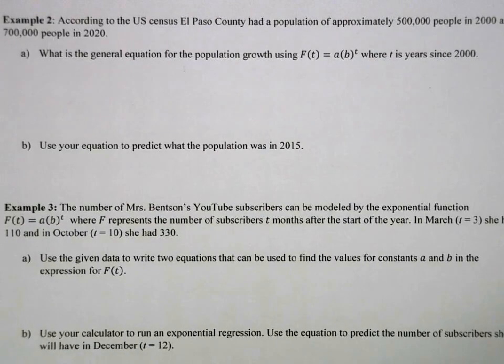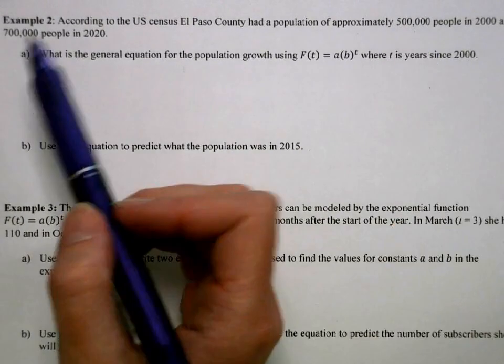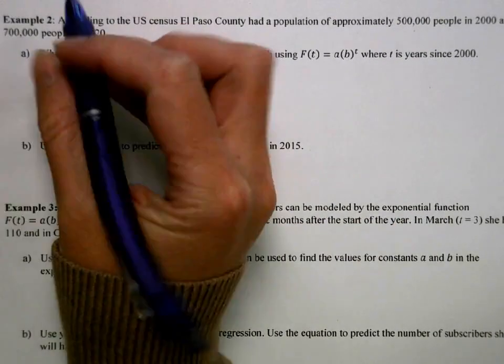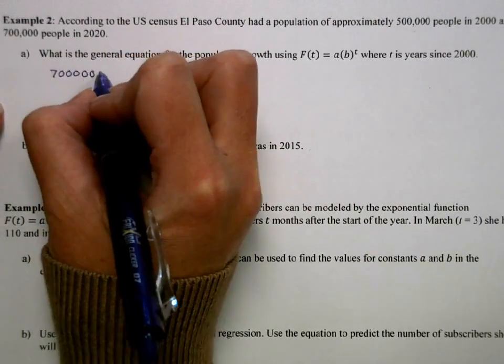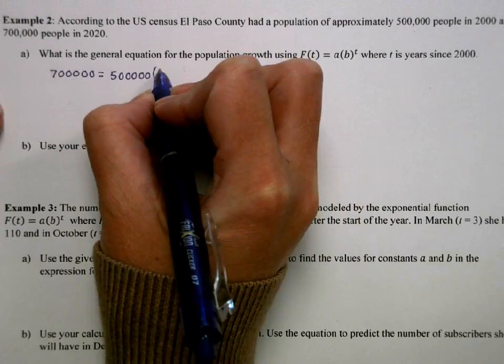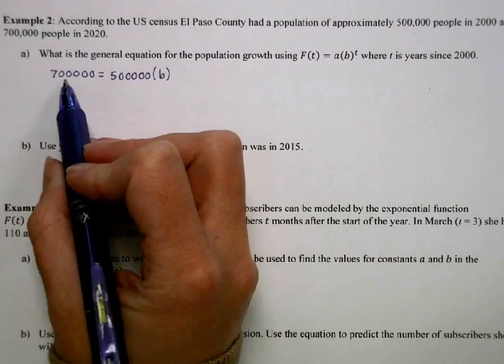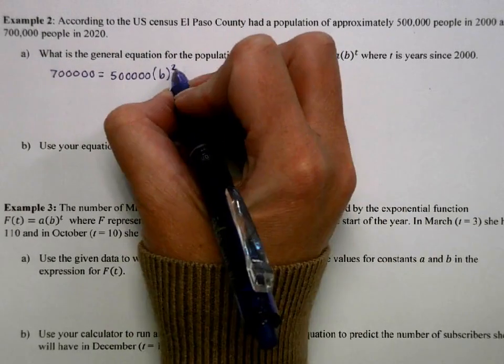Next, according to the U.S. Census, El Paso County had a population of approximately 500,000 people in 2000 and 700,000 people in 2020. What is the general equation where t is measured in years since 2000? We're given an initial amount and a future amount, so I'm going to set my equation equal to 700,000, with my initial value being 500,000. We're solving for that B value, and to go from 500,000 to 700,000 from 2000 to 2020, we're raising this to the 20.